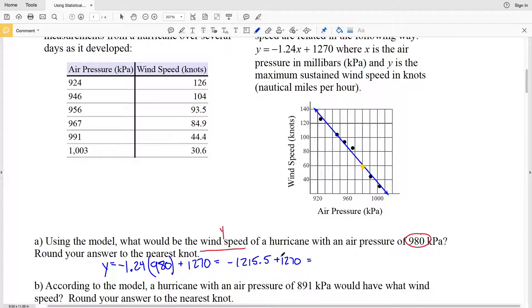Negative 1.24 times 980 equals negative 1215.2, and we're going to be adding 1270 to that. Once we add 1270, we will get 54.8 as our wind speed in knots. However, it says to round to the nearest knot, so that nearest whole number will be 55. So 55 knots is our solution in part A.